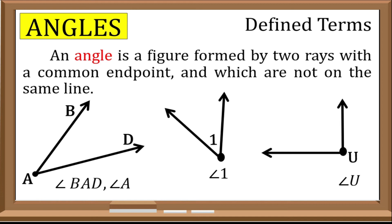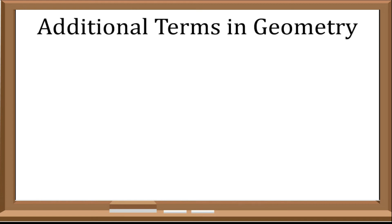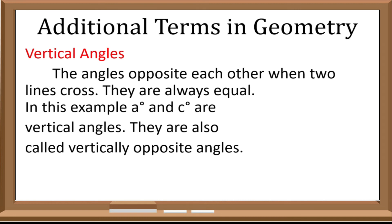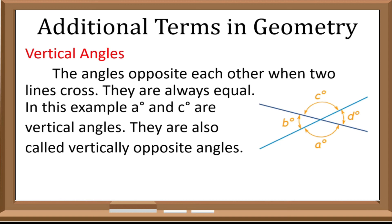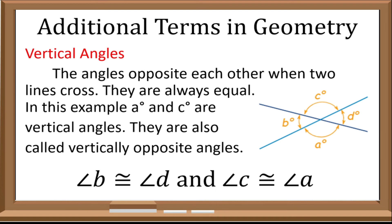Now I will give an additional term that can be used in geometry. First is vertical angles — the angles opposite each other when two lines cross. They are always equal. In this example, angle A and angle C are vertical angles, and also angle B and angle D are vertical angles. They are also called vertically opposite angles. So we can conclude that angle B is congruent to angle D, and angle C is also congruent to angle A.